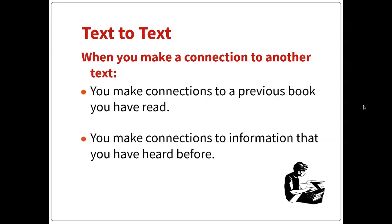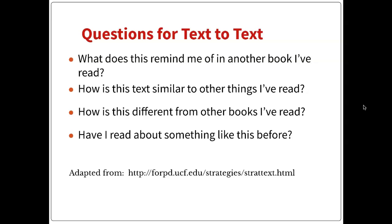Text-to-text is the second type. When you make a connection to another text, you're making a text-to-text connection. So if you connect what you're reading to another book or something you learned before, that counts as text-to-text. Maybe something reminds you of a movie or a show, or a YouTube video about something similar — that is also text-to-text. Questions for text-to-text: What does this remind me of in another book I've read? How is this text similar to other things I've read? How is this different from other books I've read? Have I read something like this before? It doesn't have to be a book — it could be a movie, a YouTube video, or anything with information written, in video form, or that you can listen to.